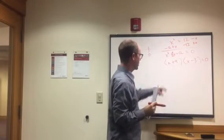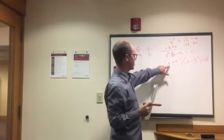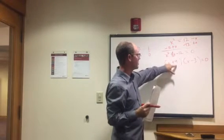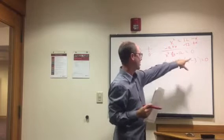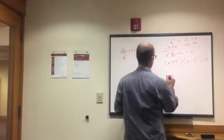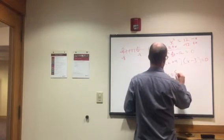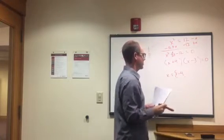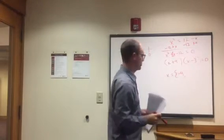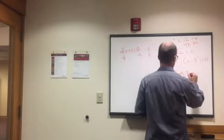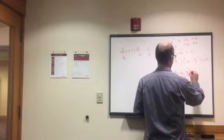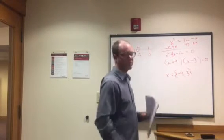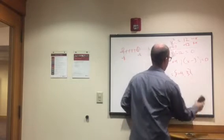Now plug in to find solutions. For (x plus 4) to equal zero, x must be negative 4. For (x minus 3) to equal zero, x must be 3, because 3 minus 3 is zero. So our solution is x equals negative 4 and x equals 3.